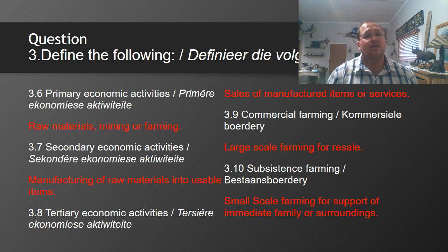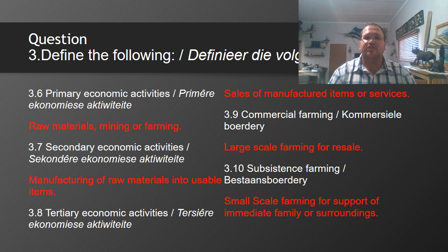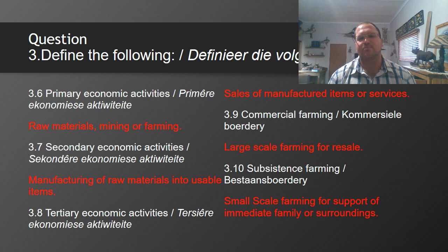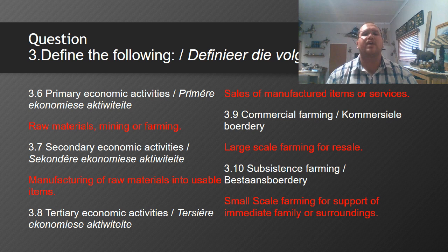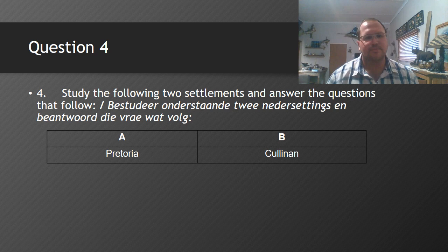Continuing question three: 3.6 primary economic activities include mining and agriculture; 3.8 tertiary is the sale of manufactured items or services. Then 3.9 commercial farming is larger-scale farming where we produce more than what we need — we produce for other people. Subsistence farming is small-scale, where we try to support ourselves and our immediate family through selling or using the crops ourselves.